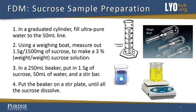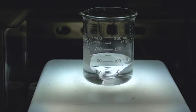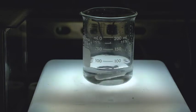In a 250 milliliter beaker, put in 1.5 grams of sucrose, 50 milliliters of water, and a stir bar. Put the beaker on a stir plate until all the sucrose dissolves.